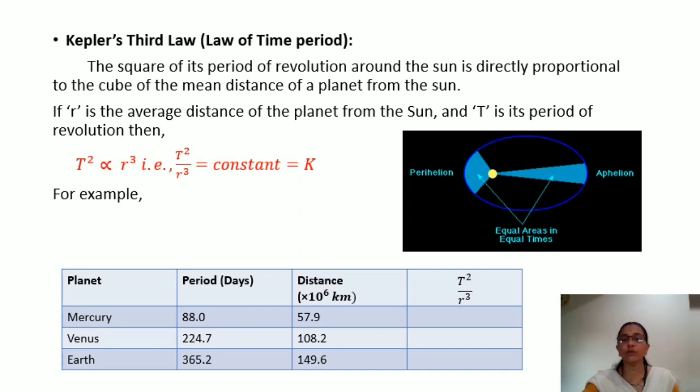So, if these two quantities are in direct proportionality, we will get a constant. To get the constant, we have to divide T square by R cube. So, all these quantities which are there, that is mercury. Its period of revolution is 88.0. Distance from the sun is 57.9. So, you have to calculate T square. T square means square of 88 divided by 57.9 cube.